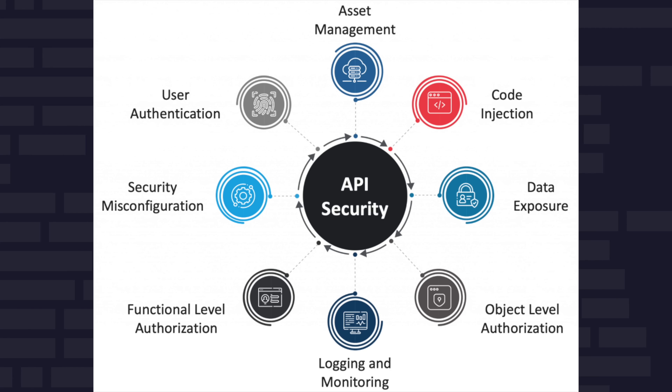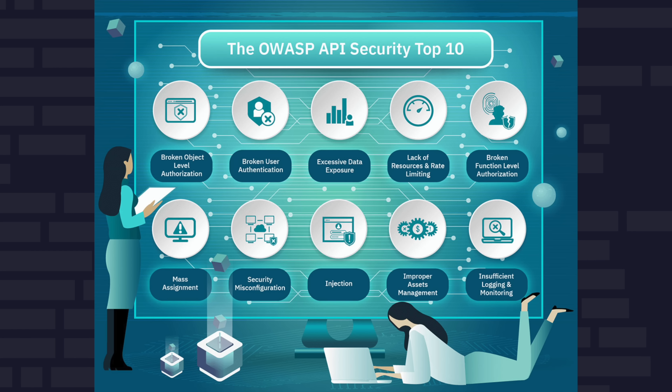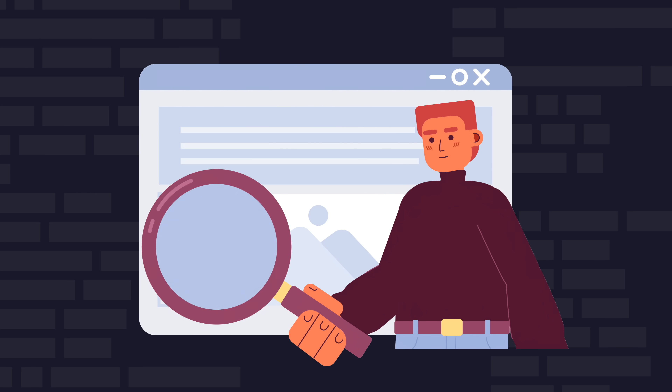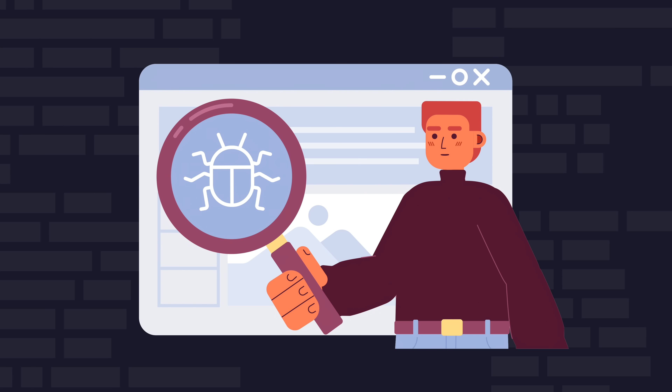API security is paramount to protect sensitive data and prevent unauthorized access. Back-end developers should be familiar with best practices such as implementing authentication, authorization, data encryption, rate limiting, and regular security audits to safeguard APIs.